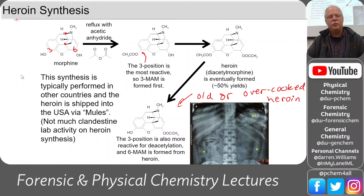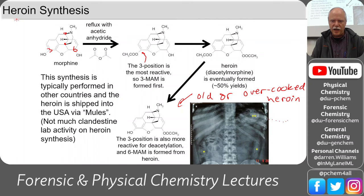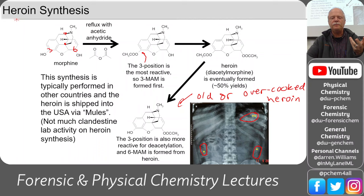Heroin synthesis is typically performed in other countries and shipped via mules — people who swallow drug-filled balloons and transport them across the border. Here's an X-ray of a mule: you can see capsules in the stomach, and some in the colon — one in the ascending colon, one in the descending colon.